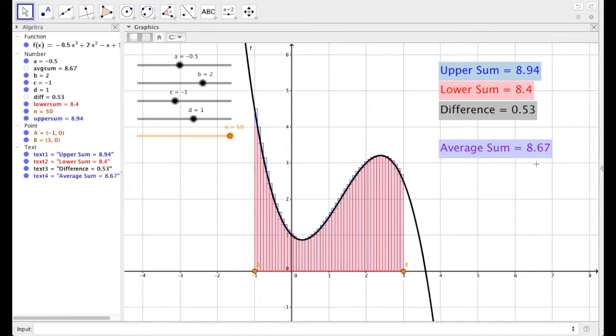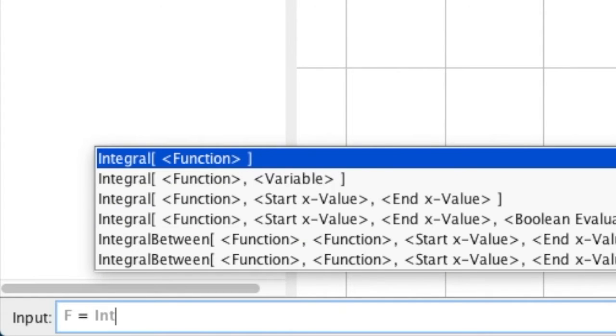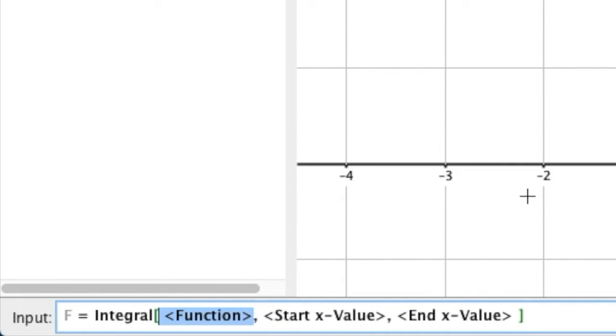So let's see how well this average sum compares with the actual integral. So to do this, down the input bar, type in capital F equals, and then integral int. Notice when I type in int, it pops up a whole bunch of options. We'll be using this third one. Integral of a function between this value and that value. So select that one. So integral of f from x of a to x of b. And remember, just hitting tab to move between those spaces. And hit enter.